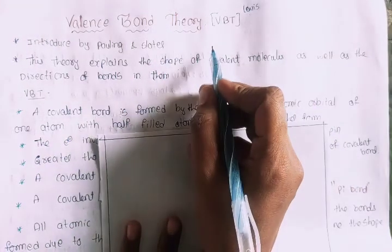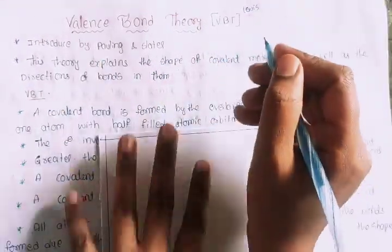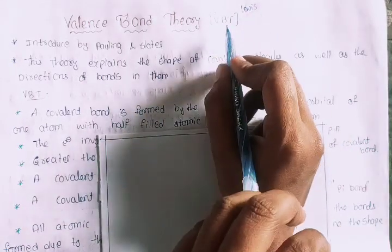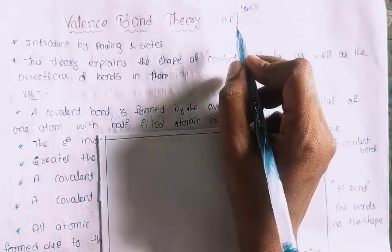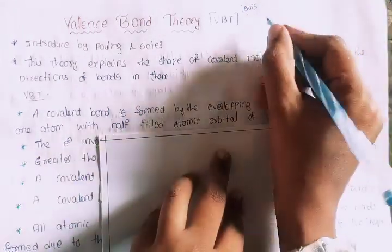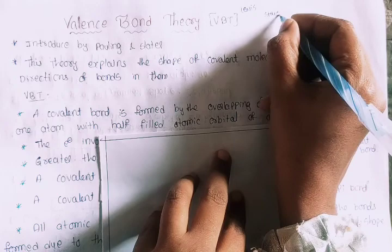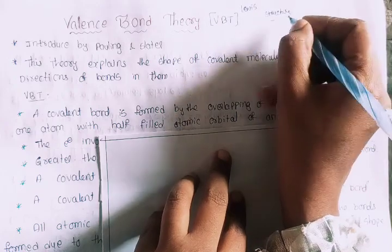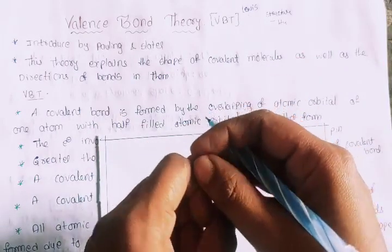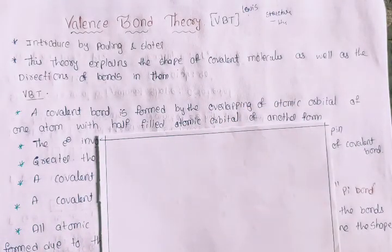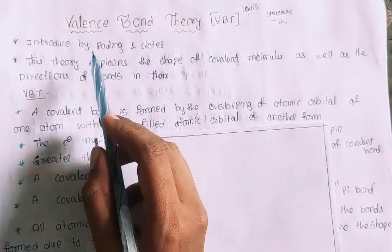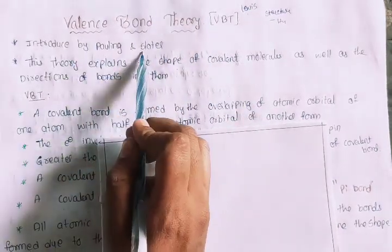Valence bond theory — actually, chemical bonding. We cover Lewis dot structure, Lewis theory, then valence bond theory, MOT theory, and VSEPR theory. Hybridization is very important. This is molecular structure geometry, and then hybridization you can easily calculate and find. So valence bond theory — first of all, we will introduce Pauling and Slater.